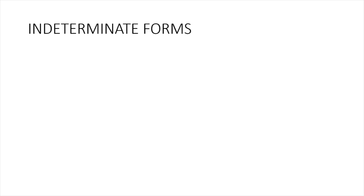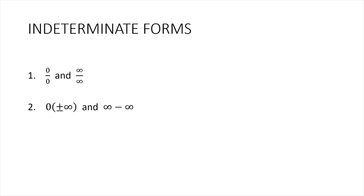Let's look at the different indeterminate forms. We already have the first two: zero over zero and infinity over infinity — these are the indeterminate quotients. Next, we have the indeterminate product, which is zero times positive or negative infinity, and the indeterminate difference, which is positive infinity minus positive infinity. Lastly, we have the indeterminate powers: zero raised to zero, infinity raised to zero, and one raised to infinity.